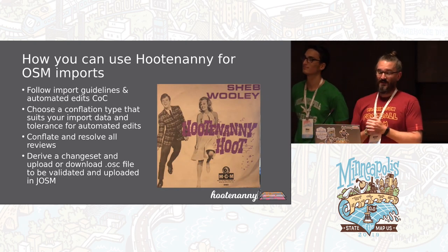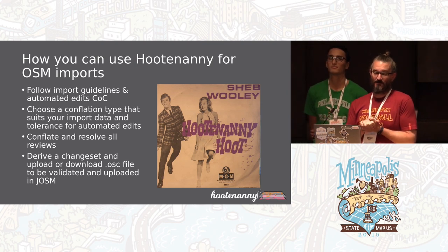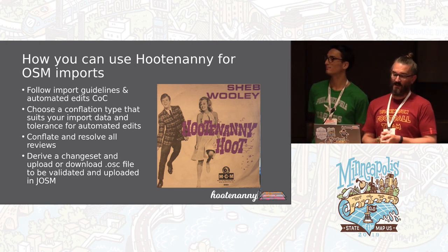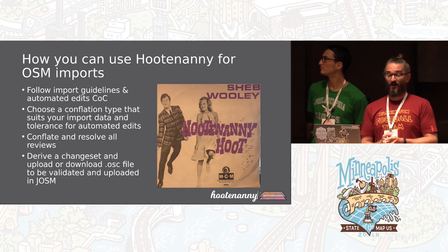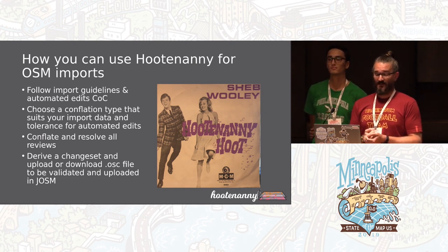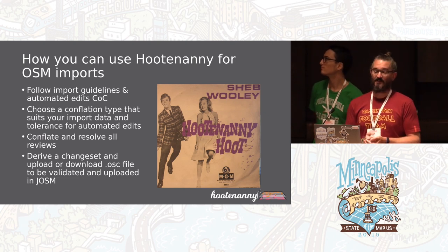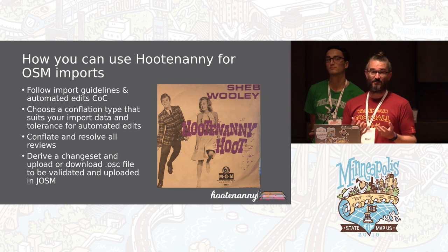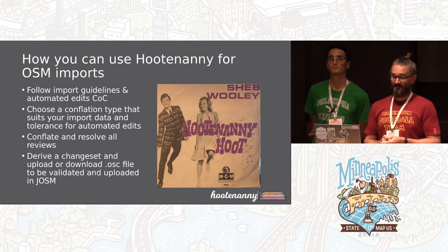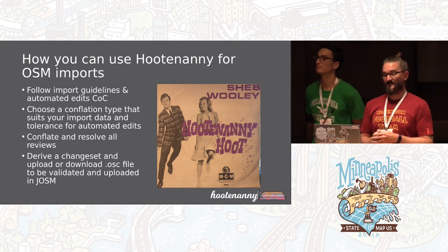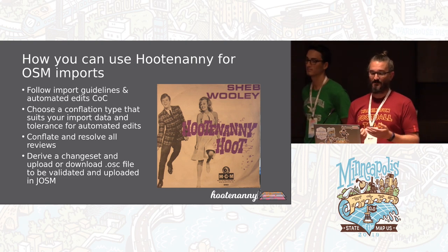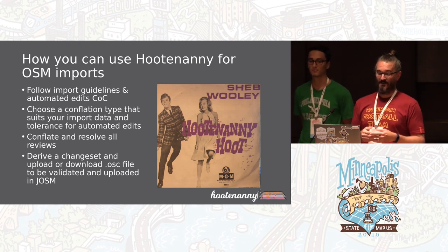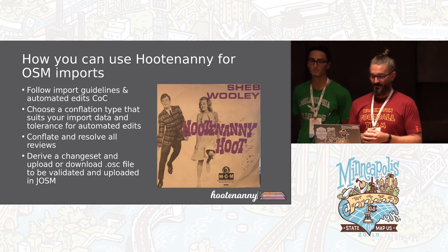For OSM imports, there's a lot of due diligence needed. Follow the import guidelines — Hootenanny is doing automated edits, so there's a code of conduct to follow. Choose the conflation type based on your data, conflate that data, resolve all the reviews, and then use the derive change set command. You can then upload it with apply change set, or download it and open it in JOSM where it can be validated, reviewed, and uploaded from there.